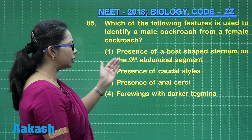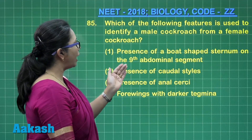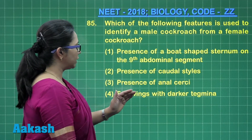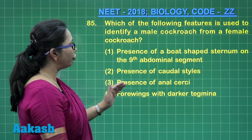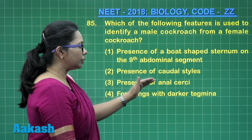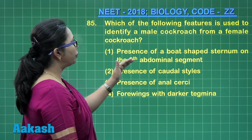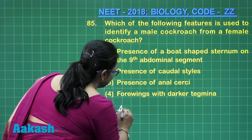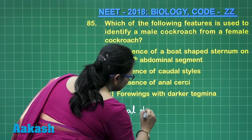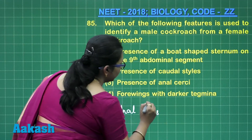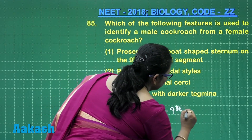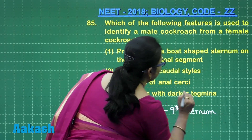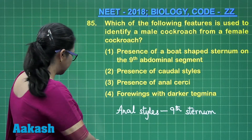The features discussed are: presence of a boat-shaped sternum on the ninth abdominal segment — this is not true; rather the female has a boat-shaped sternum but in the eighth segment. Presence of caudal styles, presence of anal cerci, and four wings with darker tegmina. Anal cerci are common to both male and female, but caudal styles, also called anal styles,